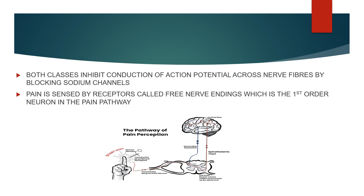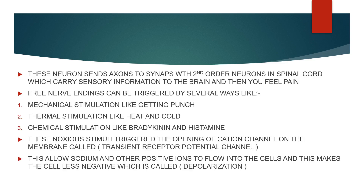Pain is sensed by receptors called free nerve endings, which are the first order neurons in the pain pathway. These neurons send their axons to synapse with second order neurons in the spinal cord, which carries the sensory information to the brain, and then you feel pain.